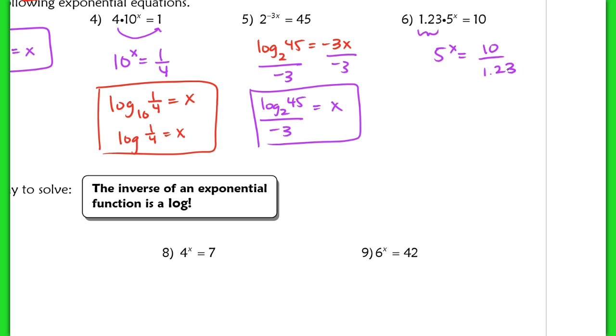Now if I want to get x alone here, I convert this. I'm stuck, so I convert this into a log equation. I have log base 5 of 10 divided by 1.23 equals x. It's isolated, and this is my solution. This would be the exact answer for number 6.